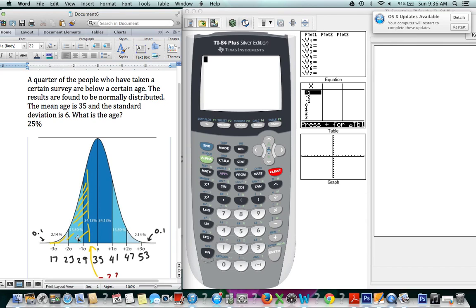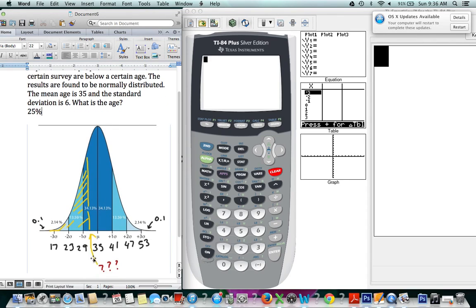So we're trying to get to 25 percent and the next number up is 34.14, so our 25 percent is somewhere in this range. It's not on that line, it's not 29, it's not 35, it's somewhere in between. We have no idea what it is yet.